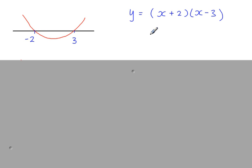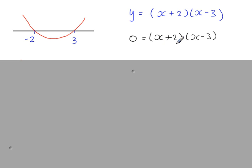When y is equal to 0 you've got x plus 2 times x minus 3 equals 0. From the first factor, x plus 2 equals 0, so x equals minus 2 — this root. And from the second factor, x minus 3 equals 0, so x equals 3 — this root here.